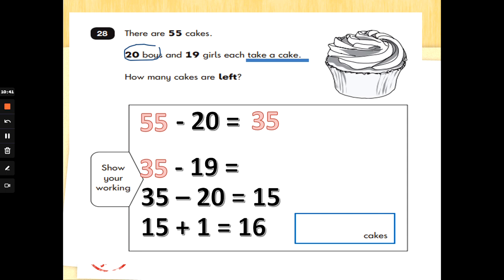Now if that way doesn't make sense to you, 35 take away 19, you can still do 35 take away 10 is 25. 25 take away 9. 9 fingers up. 25, 24, 23, 22, 21, 20, 19, 18, 17, 16. You will still get the answer 16.